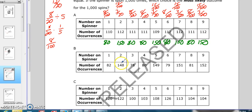If you look at B, you have 82, 148, 78, 80, 149, 79, 151, 81, and 152. All of those numbers are within one or two of what we're looking for. So B is the closest table to what we expect.